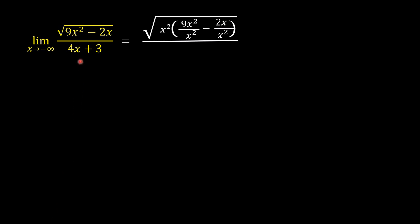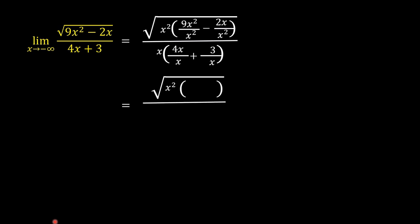The variable with the largest exponent in the denominator is x. So divide 4x by x and then plus 3 over x, and multiply 4x over x plus 3 over x by x. This is now equal to the square root of x squared times the quantity 9 minus 2 over x, divided by x times the quantity 4 plus 3 over x. We can verify: x squared times (9 minus 2 over x) equals 9x squared minus 2x, and x times (4 plus 3 over x) equals 4x plus 3.